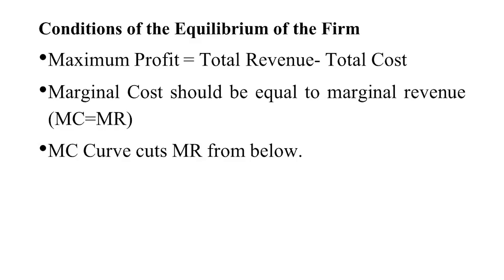In detail, the conditions of firm equilibrium are: first, maximum profit equals total revenue minus total cost. Second, marginal cost (MC) must be equal to marginal revenue (MR). Third, the MC curve must cut the MR curve from below. We will discuss these conditions in detail with the help of a graph, showing how these two conditions are fulfilled in the case of equilibrium of the firm.